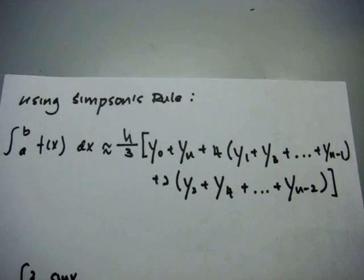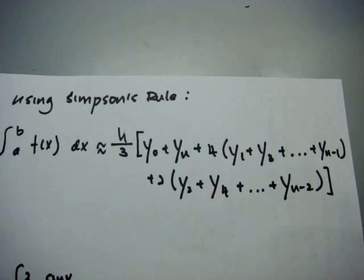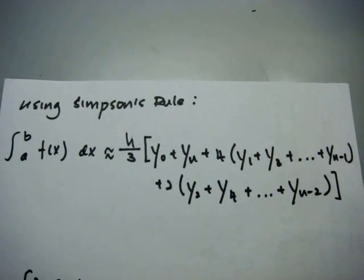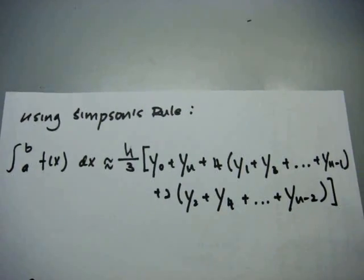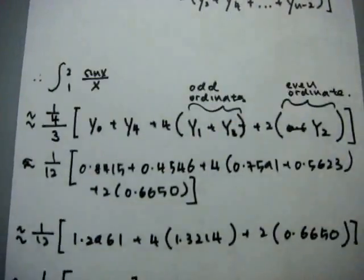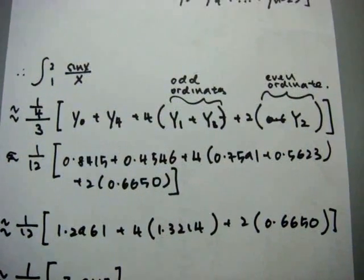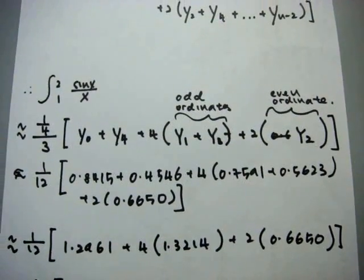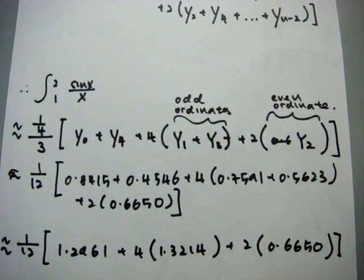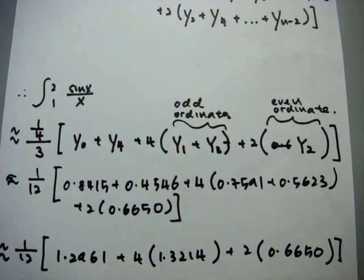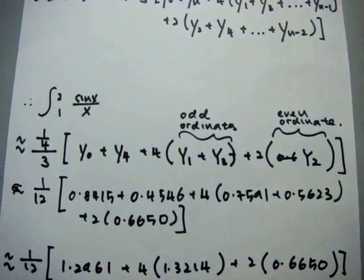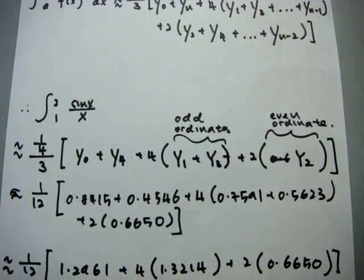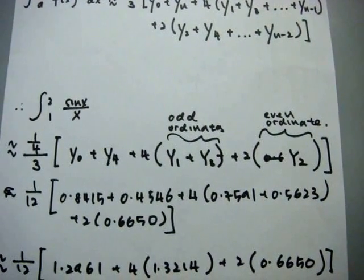After that, I proceed on to use Simpson's rule. This is the formula that we need to use in order to find our value of integration. By integrating sin x over x from 1 to 2, you will get approximately 1 quarter over 3 multiplied by y0 plus y4 plus 4 multiplied by y1 plus y3 plus 2 multiplied by y2.